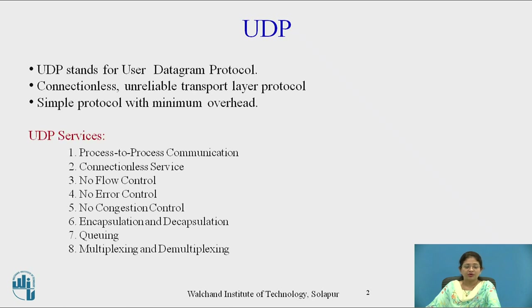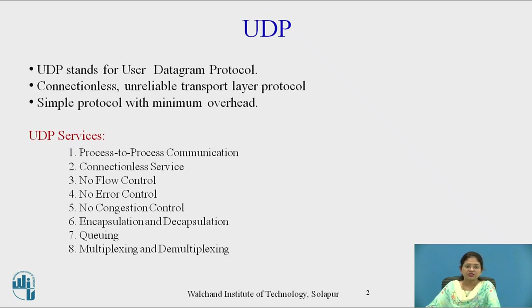These are the various services provided by UDP, which include process-to-process communication and connectionless service. UDP does not provide flow control or congestion control. It also does not provide error control except checksum. UDP provides encapsulation and decapsulation, queuing, and also multiplexing and demultiplexing.